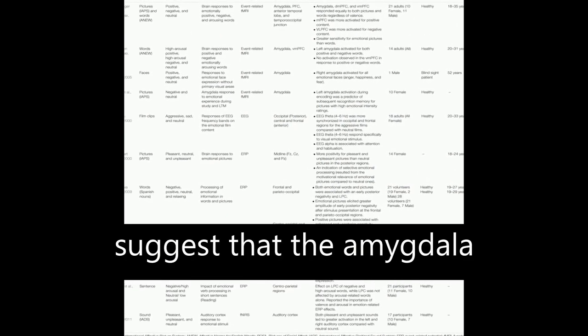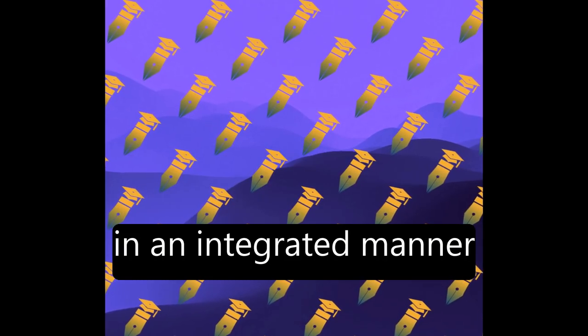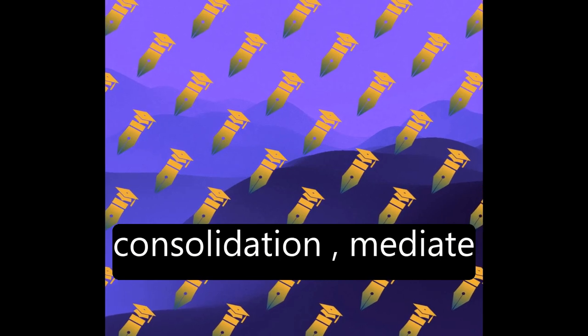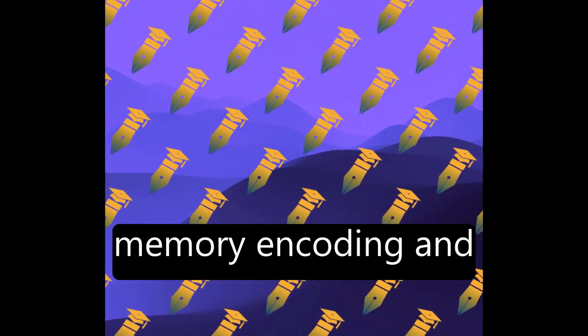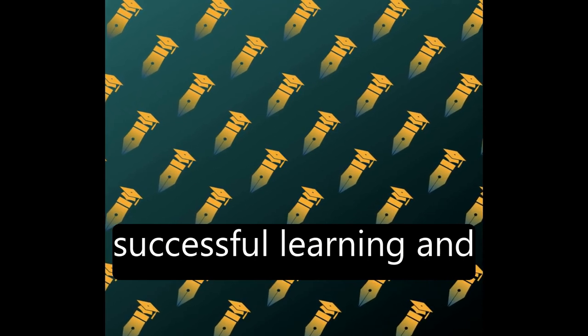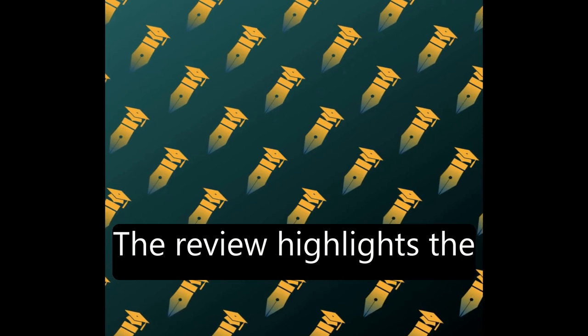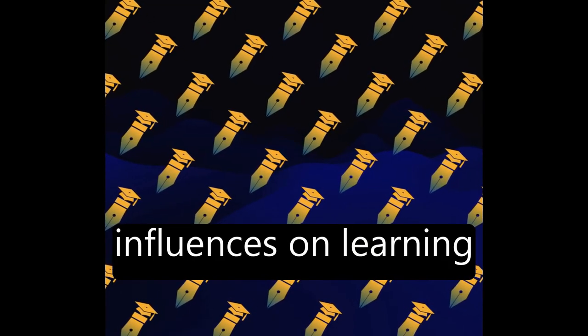Neuroimaging findings suggest that the amygdala, prefrontal cortex, and hippocampus work together in an integrated manner to modulate memory consolidation, mediate memory encoding and formation, and ensure successful learning and long-term memory retention.